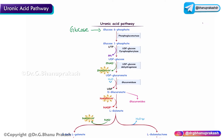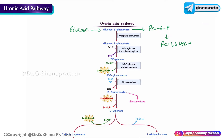In glycolysis, glucose gets converted to glucose 6-phosphate, mediated by the enzyme hexokinase or glucokinase. The same glucose 6-phosphate enters into fructose 6-phosphate, which gets converted to fructose 1,6-bisphosphate — that is the normal glycolytic pathway. The uronic acid pathway utilizes glucose 6-phosphate, a byproduct of glycolysis, as its primary molecule.